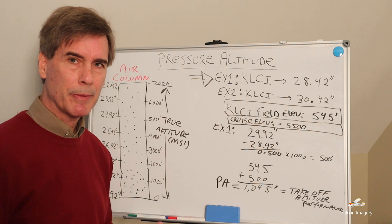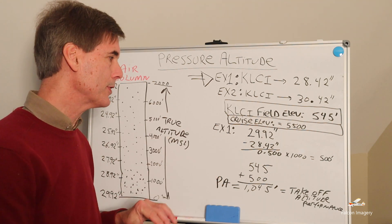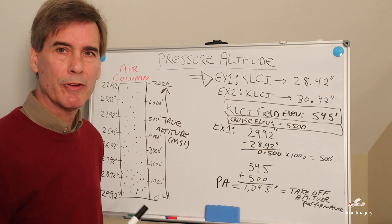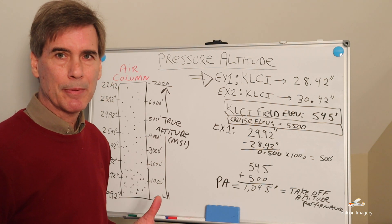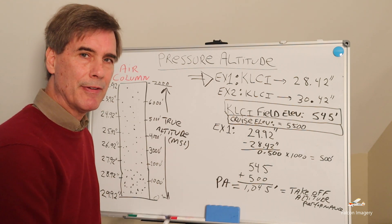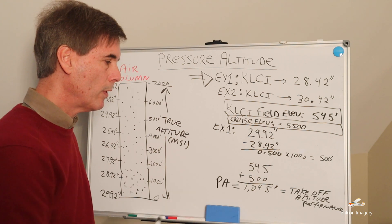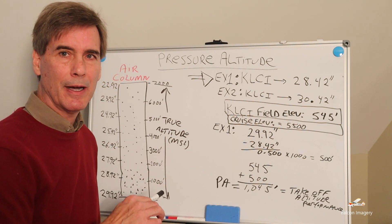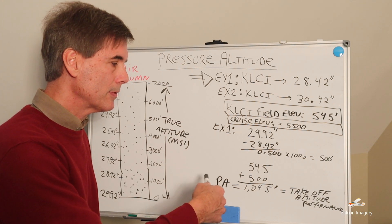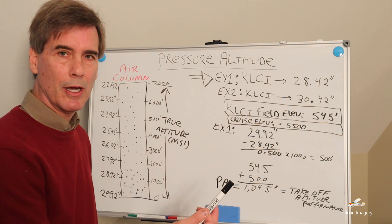The question is, what do we do with that 500 feet? We're going to either add or subtract depending on what the AWOS pressure reading is relative to standard pressure. In this example, the AWOS reports 28.42 inches of mercury, which tells us the air pressure is lower than standard pressure. As a result, we take our field elevation of 545 feet and add 500 feet to come up with our pressure altitude of 1,045 feet. That is the takeoff pressure altitude we would use in the charts to determine takeoff performance.